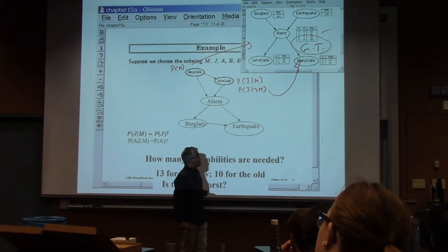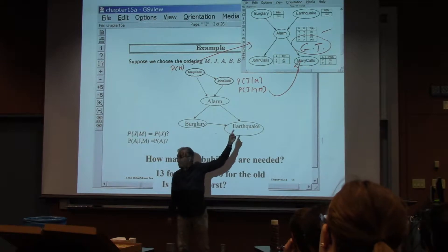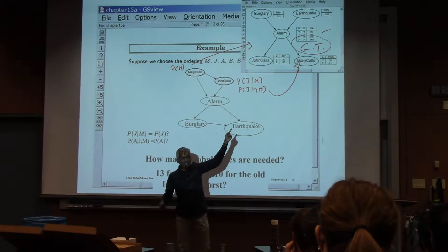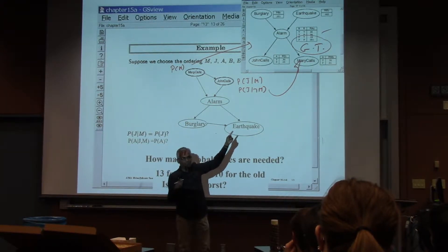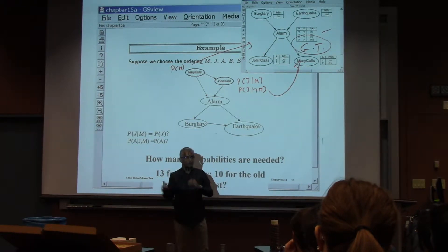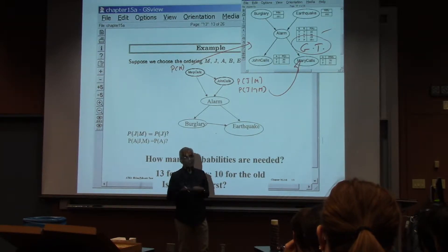Now that would mean, of course, that if only you knew the causal order, you would have asked the expert the variables in the causal order. But remember, there's an expert who knows something about causality, and there's a knowledge engineer who knows something about Bayesian networks. Between them, they can very well start in the right order.